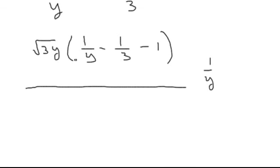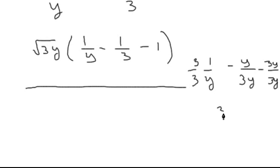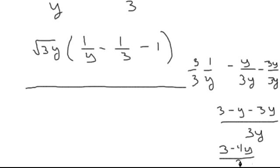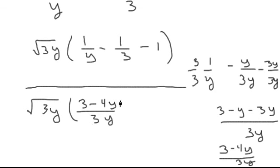You get a common denominator, which is 3y: that gives 3 over 3y, minus y over 3y, minus 3y over 3y. So we have 3 minus y minus 3y all over 3y, which becomes 3 minus 4y over 3y. That ends the problems in this section.